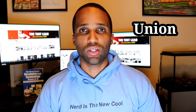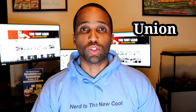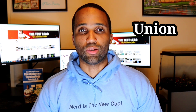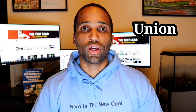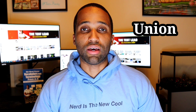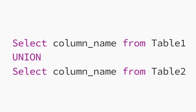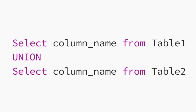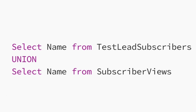And now finally, SQL union. Union allows you to combine two or more select statements. However, each select statement needs to have the same number of columns and the data types have to be similar in the columns. The command looks like this: select column name from table one, union select column name from table two. Our example is: select name from test lead subscribers union select name from subscriber views. This will return all the name values from both tables.